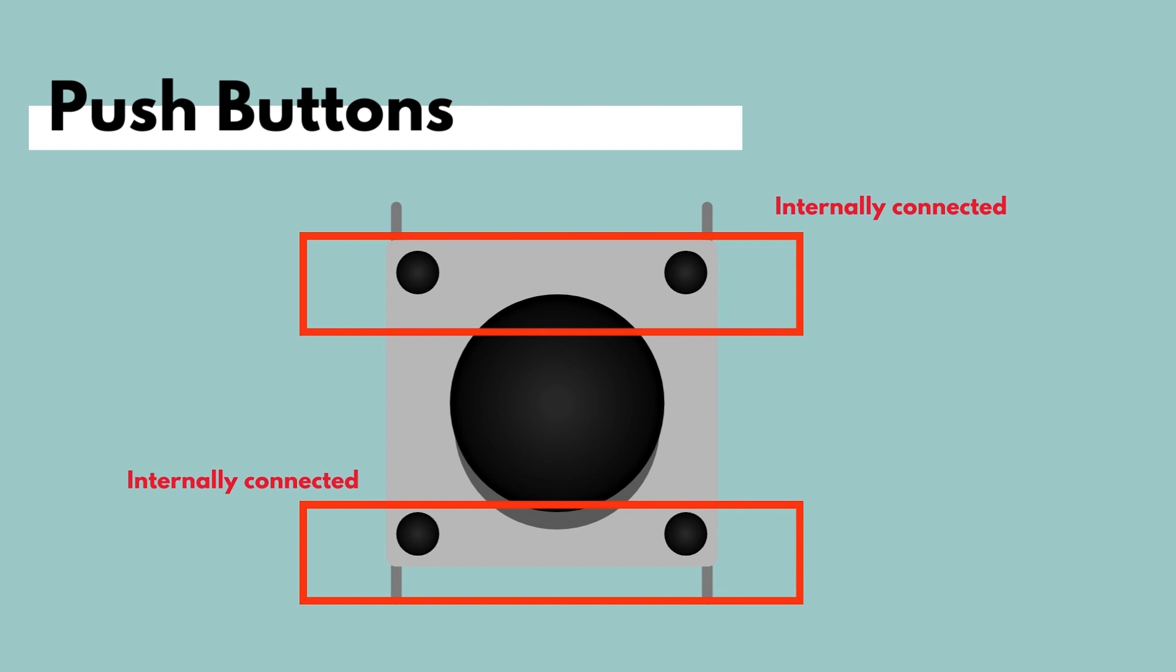And the two terminals on top are internally connected. So you can think of them as a node. And the two on the bottom are internally connected. So you can think of them as a node. And we can connect these two nodes by pressing the switch to create a connection between either ends.